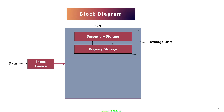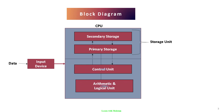There are two more units: the control unit and the arithmetic and logical unit. The control unit is the main unit — it controls everything, including the coordination between the secondary storage device and the primary storage device, and also coordinates the input devices and output devices. Everything is maintained by the control unit.